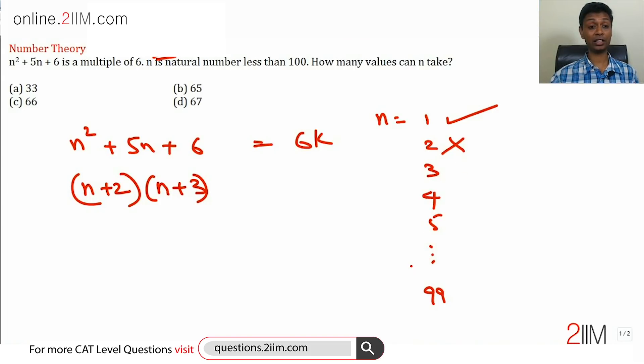When n is 3, it's 5 into 6, it works. When n is 4, it is 6 into 7, it works. When n is 5, 7 into 8, 7 into 8 is 56, that doesn't work. When n is 6, 8 into 9, that works.